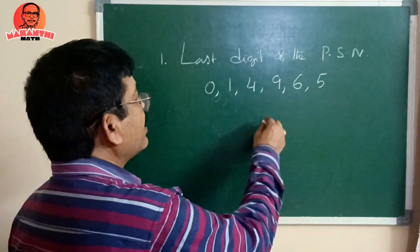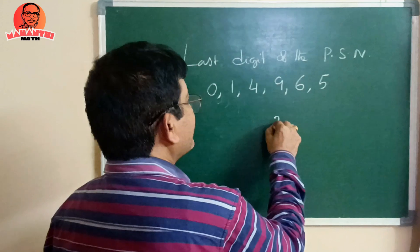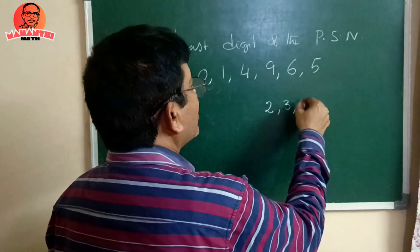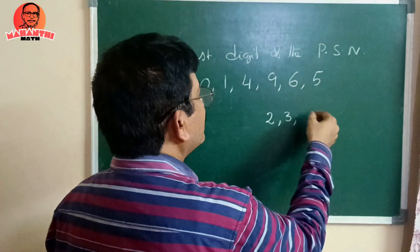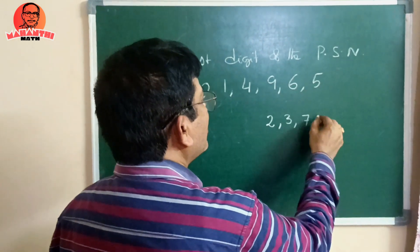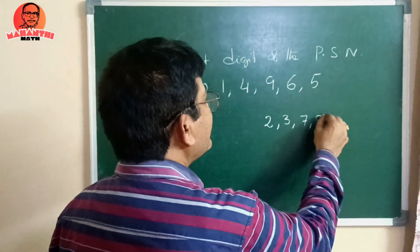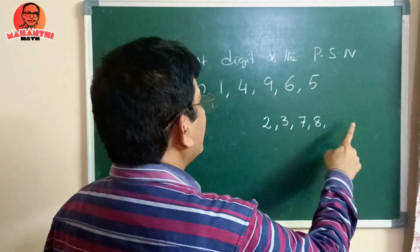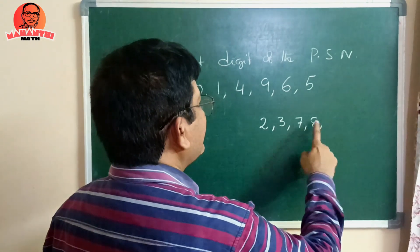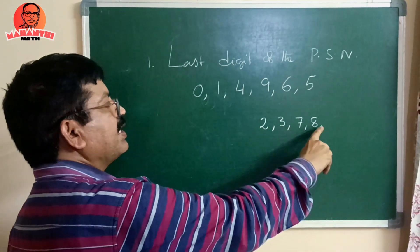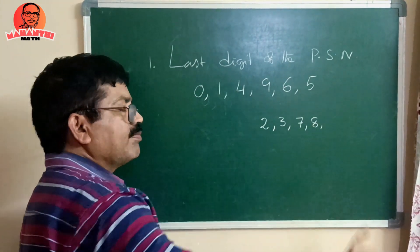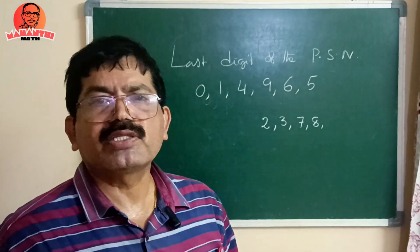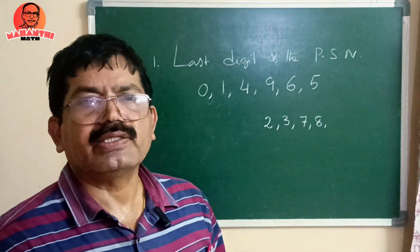Other than these digits means: if a number ends with 2, or 3, or 7, or 8, then it cannot be a perfect square. That much we can tell.